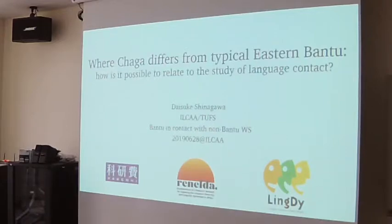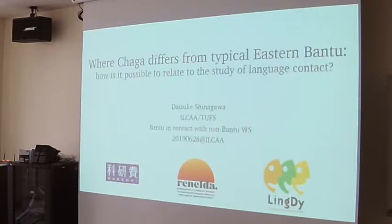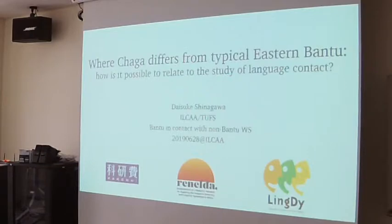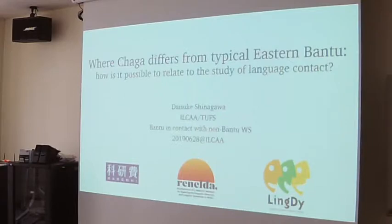I changed the subtitle slightly, so it's about how it's possible to relate to the study of language contact. I will talk about some atypical features found in Chaga which are not typical in Eastern Bantu. Like Hannah's talk, I'd like to focus on these uncommon atypical features of Chaga, and I will consider the possibility that such features were brought about from contact with non-Bantu languages.